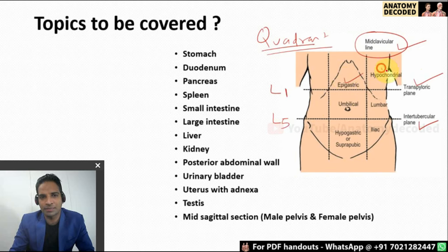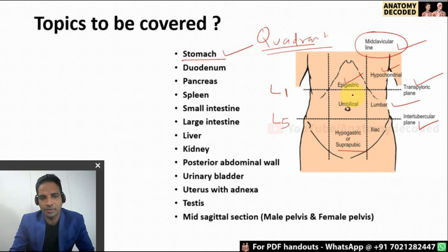Here are the regions: epigastric, hypochondriac — right and left, umbilical, then right and left lumbar, hypogastric — also referred to as suprapubic — and right and left iliac. The stomach is located in the epigastric region as well as some part of hypochondriac and the umbilical region.